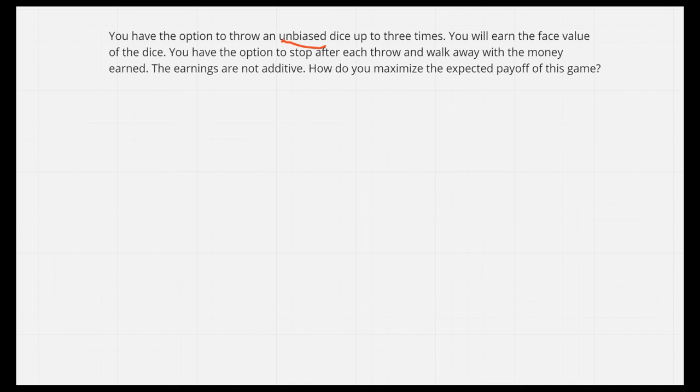You have the option to throw an unbiased dice up to three times. You learn the face value of the dice. You have the option to stop after each throw and walk away with the money earned. The earnings are not additive, meaning that you only get the earning of the last dice.